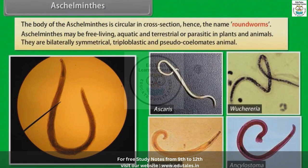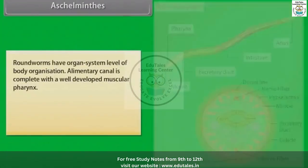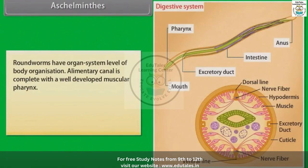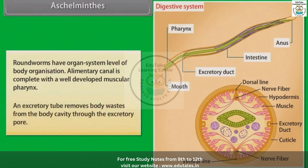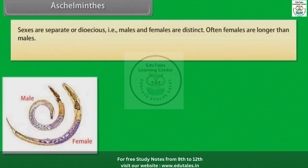Aschelminthes are bilaterally symmetrical, triploblastic and pseudocoelomate animals. Roundworms have organ system level of body organization. The alimentary canal is complete with a well-developed muscular pharynx. An excretory tube removes body waste from the body cavity through the excretory pore. Sexes are separate, that is dioecious — males and females are distinct.